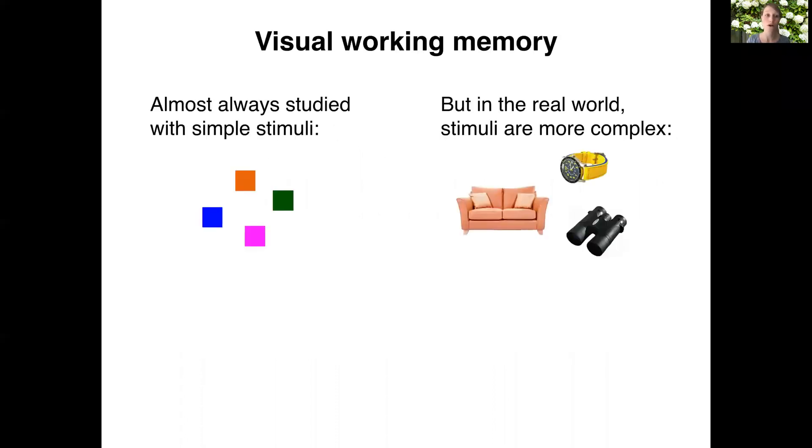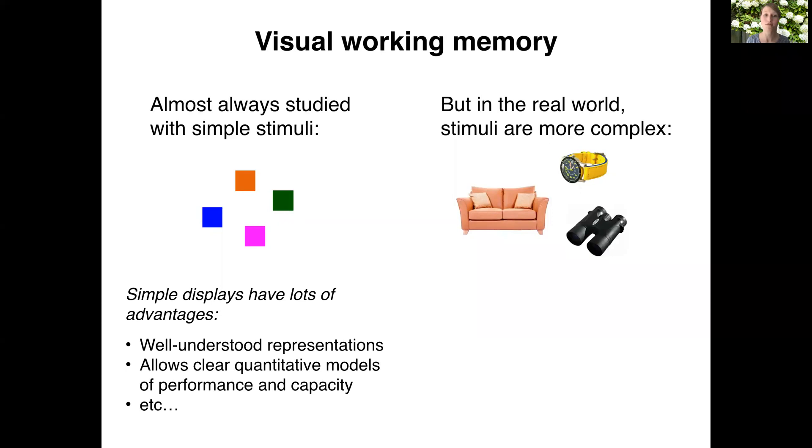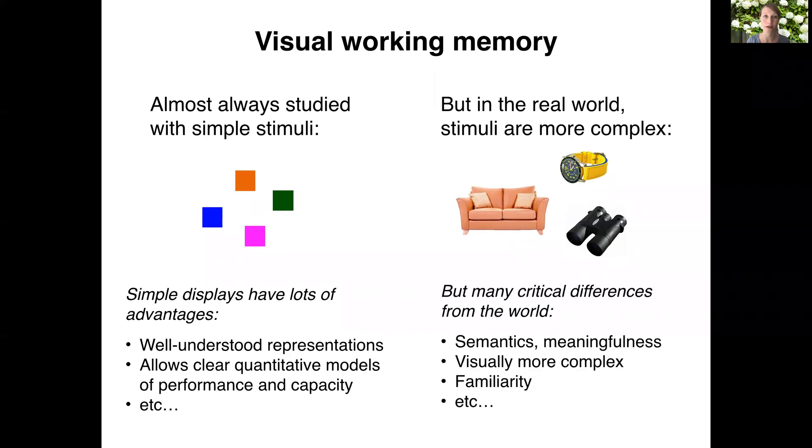Visual working memory is almost always studied using simple stimuli, while in the real world we encounter much more complex visual objects. And of course there are very good reasons to use such simplified displays, for example because we have a very good understanding of the representational structure of the stimuli and thus can build clear quantitative models of performance and capacity.